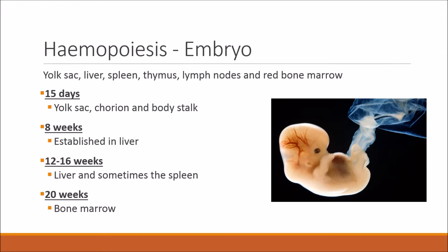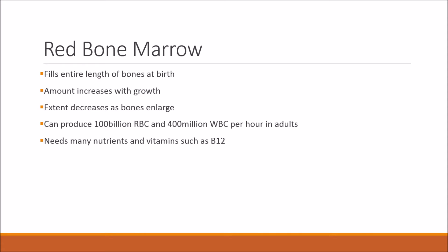You start producing blood at a very young age — at 15 days as an embryo. At 15 days you start producing blood in the yolk sac, the chorion, and the body stalk. After 8 weeks, once you have a liver, that becomes the main site of haemopoiesis. Between 12 and 16 weeks it occurs in the liver and sometimes in the spleen. Then from 20 weeks onwards it is mainly in the bone marrow — specifically red bone marrow.